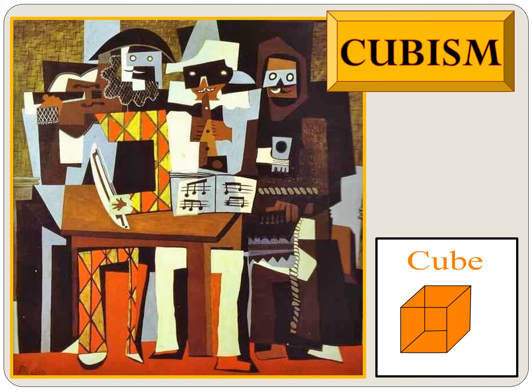It is called cubism because the pictures were made of little cubes or boxes. Picasso painted as if he could see all sides at once. He wanted you to see all the interesting shapes and colors, and not what it really looked like. This painting reminds me of a puzzle that I might have fun putting together.